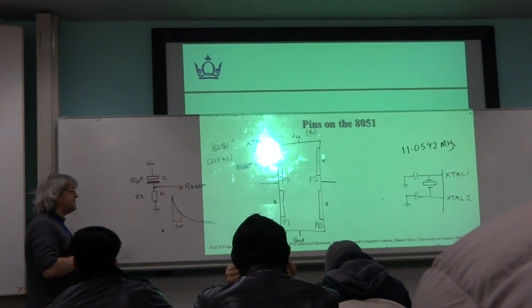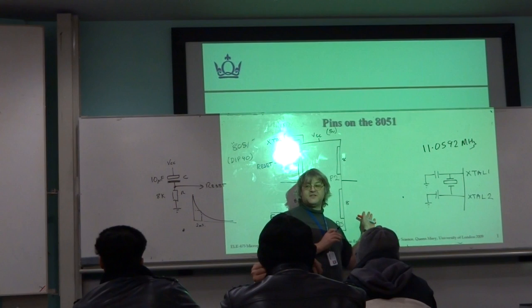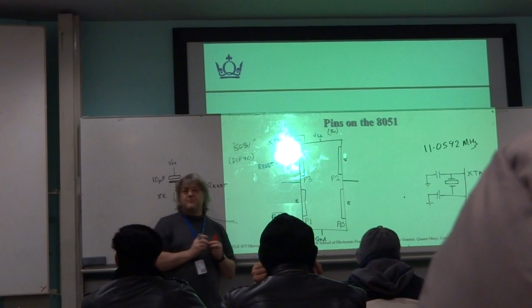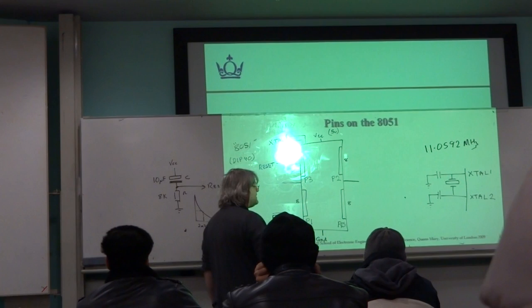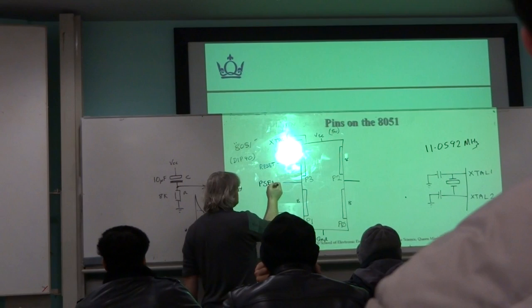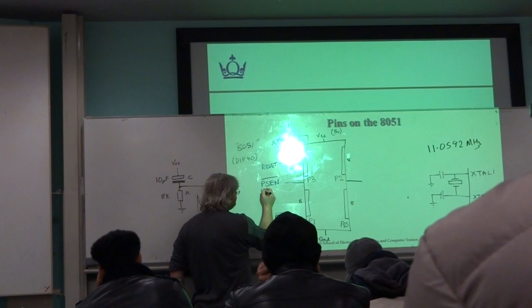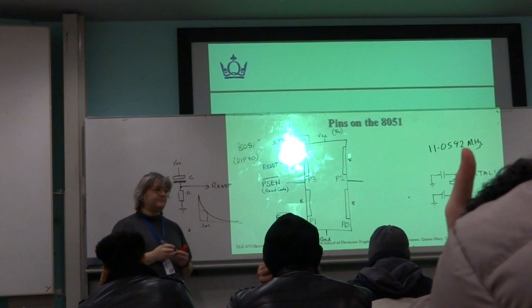In order to talk to external program memory, now remember, program memory as far as the 8051 is concerned, it can't write to it. The 8051 is a Harvard architecture, it's not von Neumann. So as far as it's concerned, it has these two types of memory: code memory, if you like program memory, and data memory. And as far as it's concerned, program memory as if by magic just appears and it's there. And it can read it, but you can't write to it. So it needs a signal to read it.